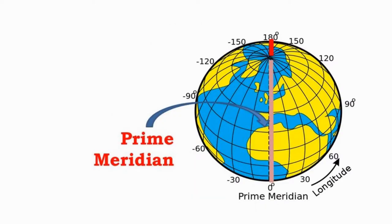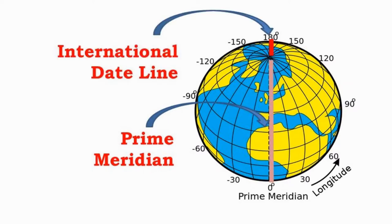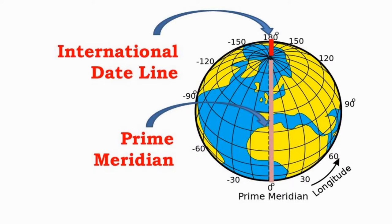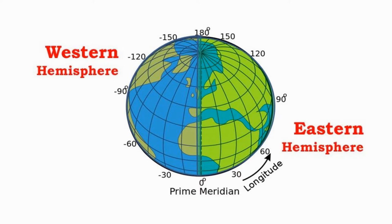The longitudes or meridians are lines connecting the two poles. The meridian passing through Greenwich in Great Britain is defined as the zero-degree meridian or the prime meridian. The other meridians are either east of the prime meridian or to the west. On the opposite side of the prime meridian lies the meridian defining the international dateline. The prime meridian together with the international dateline divide the globe into the western hemisphere and the eastern hemisphere.